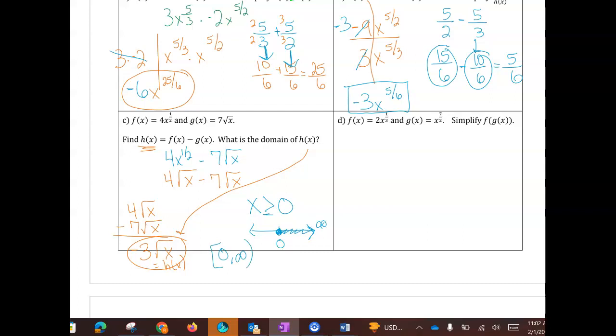On the last one here, we have a composite function that says g is going to go into f. So I'll still have the 2, but in for x I'll put x to the 7 halves, but then I'll still have the 1 third power. So parentheses, I'll distribute this to this. 7 halves times 1 third. I don't see any simplifying, so I'm just going to multiply across, 7 and 6. So when I'm done, I get 2x to the 7 sixths power.